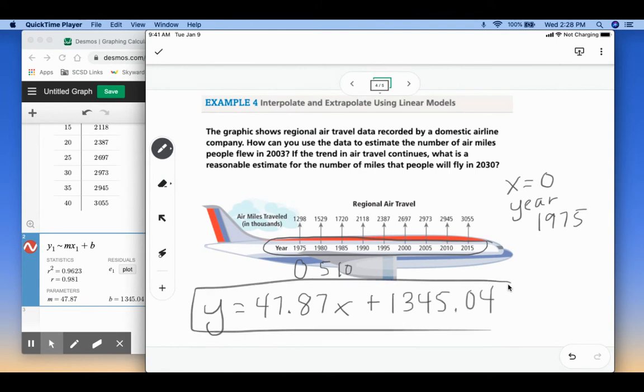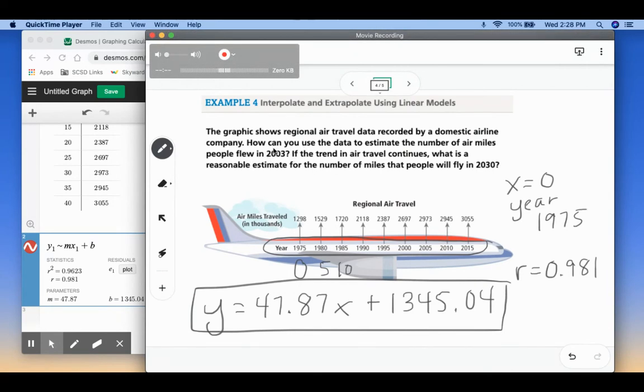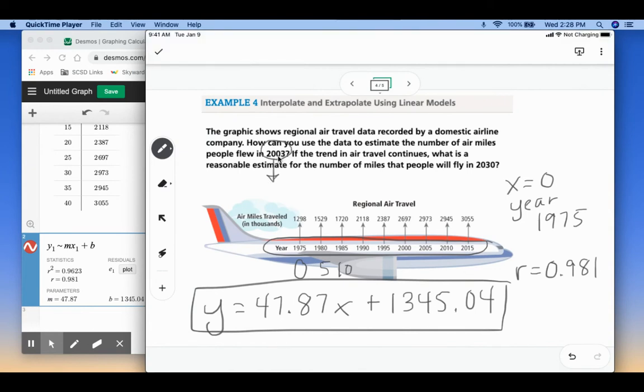So that tells us that our equation is y equals 47.87x plus 1345.04. So there is our linear equation. We can see that r is equal to 0.981. That means we have a pretty strong positive correlation with this situation. So now it says we want to predict the number of people that flew in 2003. So we have to figure out how many years past since 1975 is 2003. Well, if we take 2003 minus 1975, we get 28. And then 2030 would be 55 years past. So what we're going to do is we're going to take those numbers, and we're going to plug them in right here for x.